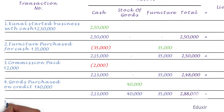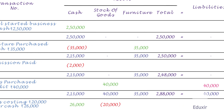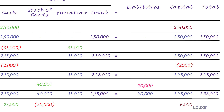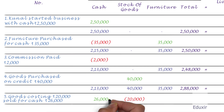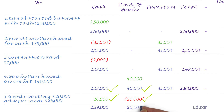The fifth transaction is: He sold goods costing ₹20,000 for cash ₹26,000. This transaction decreases the stock of goods by ₹20,000. As the goods are sold for cash ₹26,000, it adds up to the cash asset. Also, as goods worth ₹20,000 are sold for ₹26,000, there is a profit of ₹6,000, which should be added to the capital. Subtracting ₹20,000 worth of goods from ₹40,000 stock, we have ₹20,000 worth of goods remaining. Furniture remains at ₹35,000.